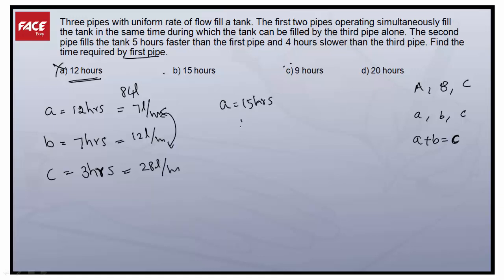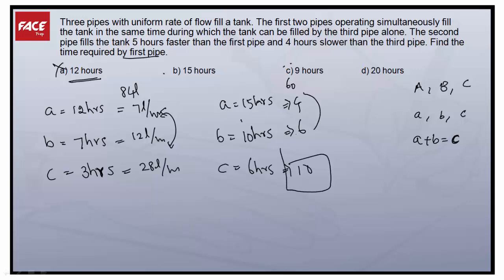Let's check Option B: pipe A is 15 hours, pipe B is 5 hours faster so 10 hours, and pipe C is 4 hours faster than pipe B which gives 6 hours. Taking the LCM, which is 60: pipe A fills 4 liters per hour, pipe B fills 6 liters per hour, pipe C fills 10 liters per hour. Since 6 plus 4 equals 10, this checks out.